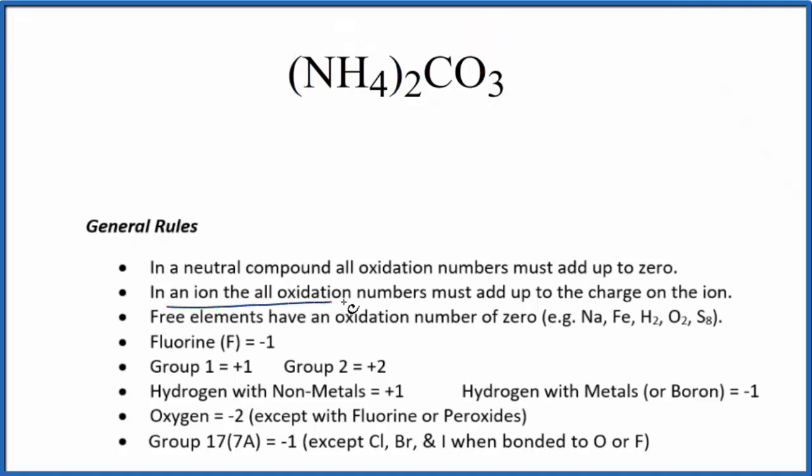In an ion, all its oxidation numbers add up to the charge on the ion. So we know the whole ammonium ion here, this NH₄ is NH₄⁺, and we have two of them. The carbonate ion, the whole thing is CO₃, and it has a 2- charge, ionic charge. So these are the two ions we're going to work with, and we can treat them separately when we find the oxidation number for each of the elements.